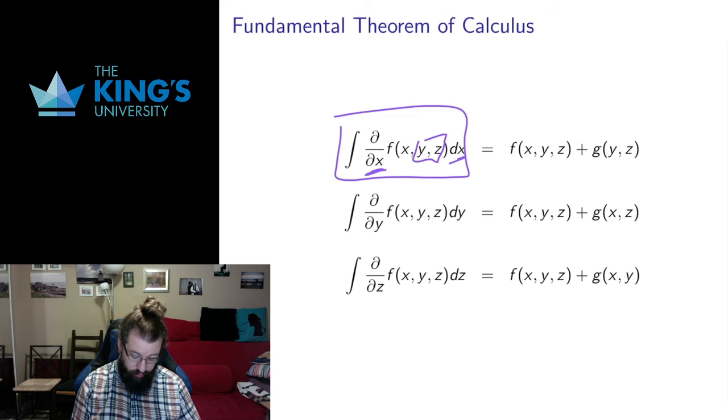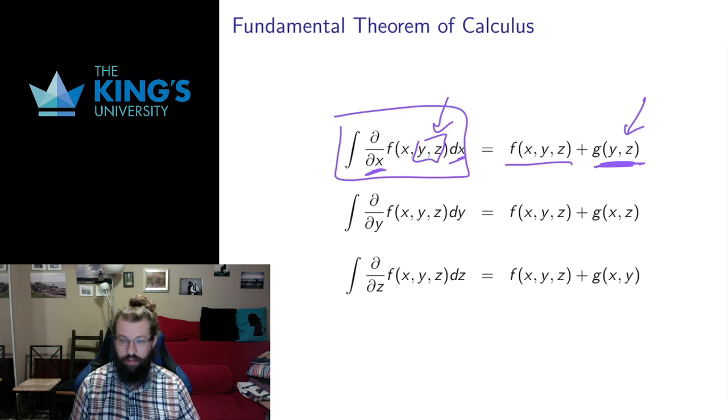So if I take a derivative and integral in y, I get the original function back. The only difference now is that the constants of integration, since I pretended that y and z were constant, well, they can show up as constants of integration. So anytime you do one of these single variable antiderivatives, you have to be aware that the constants of integration can include the other variables.